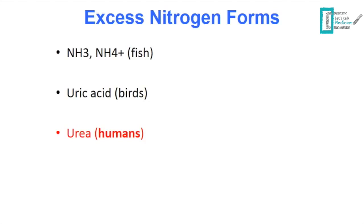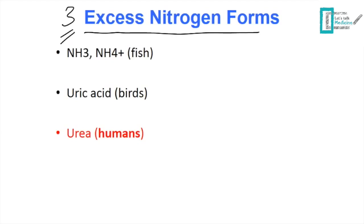Good day everyone. Today's video is a short overview of the urea cycle, presented by Rana Zehrani. To start the urea cycle, we need to know first why we form urea in our body. Our bodies need to get rid of excess nitrogen since it is toxic, and this is mainly by three ways or forms in animals and humans, as you can see here.